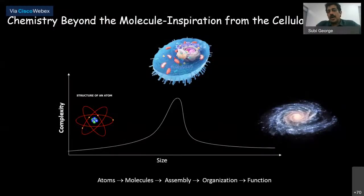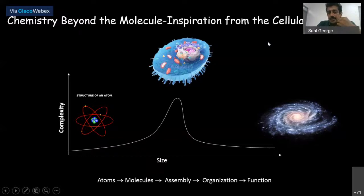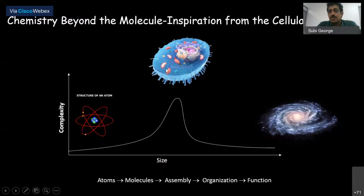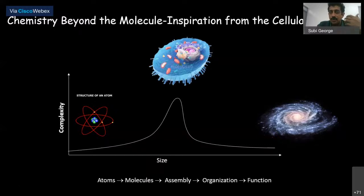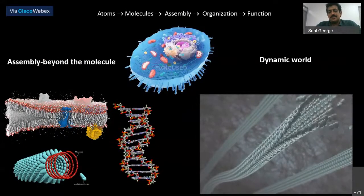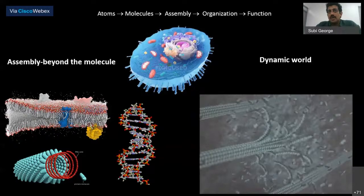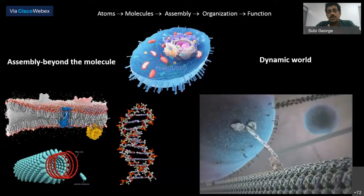Supramolecular chemistry — the chemistry beyond the molecule — was coined by Jean-Marie Lehn, the father of supramolecular chemistry. Most inspiration comes from biology. The cell is one of the most complex entities in the universe. As a chemist, you can learn a lot of design principles from the cell environment: how multiple compartments work in a compartmentalized manner, and how the cell is never at equilibrium — it is always out of equilibrium.